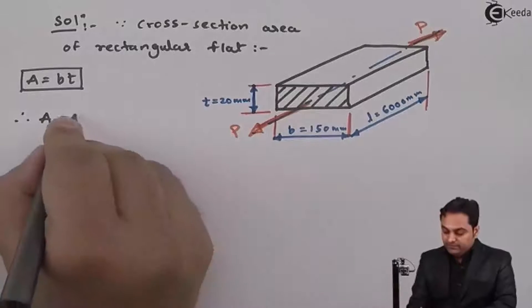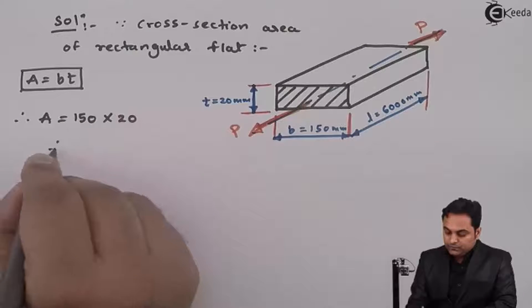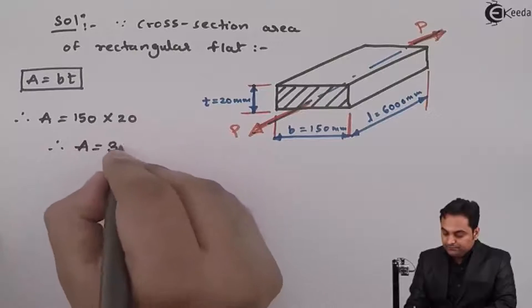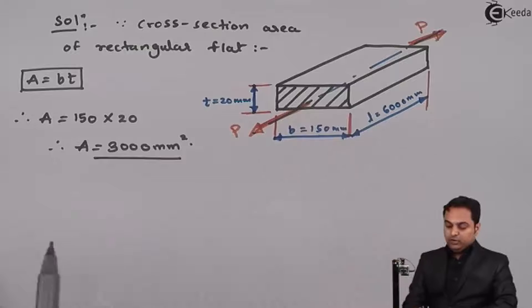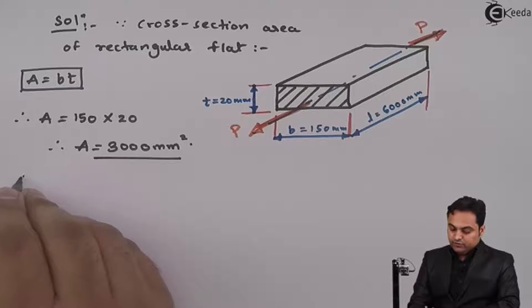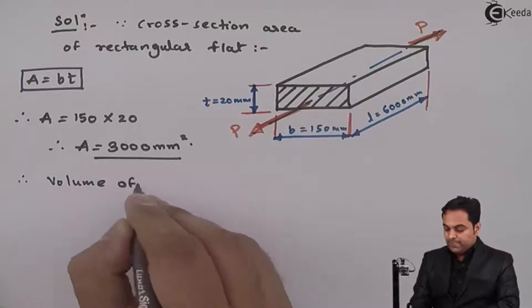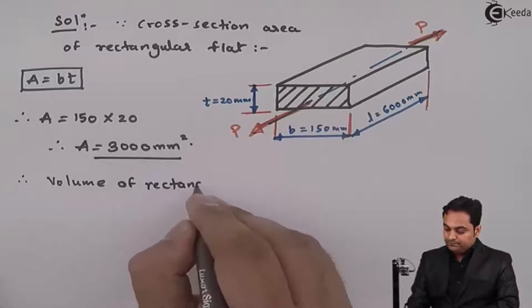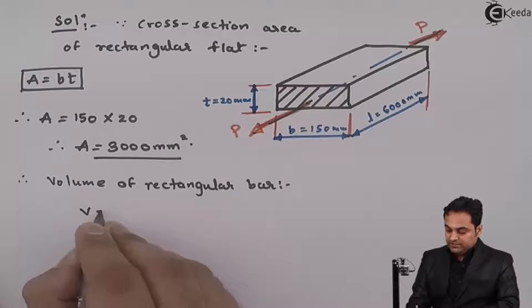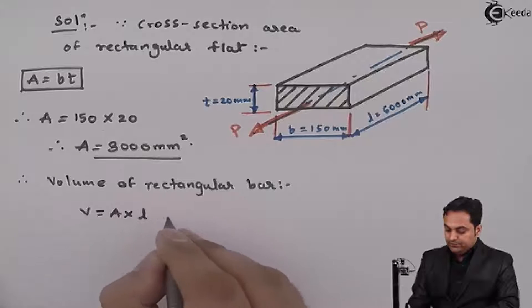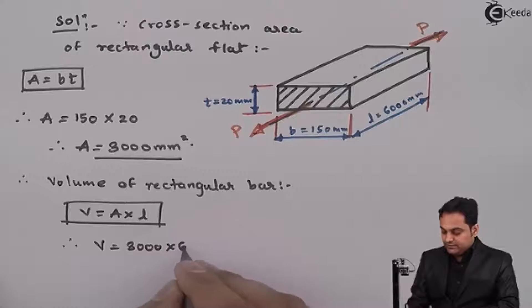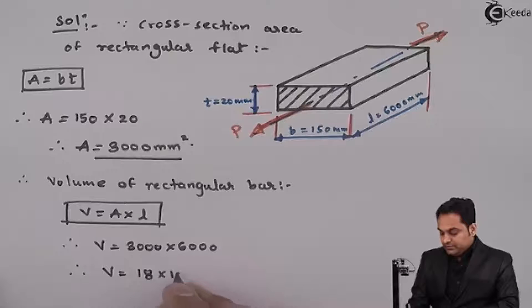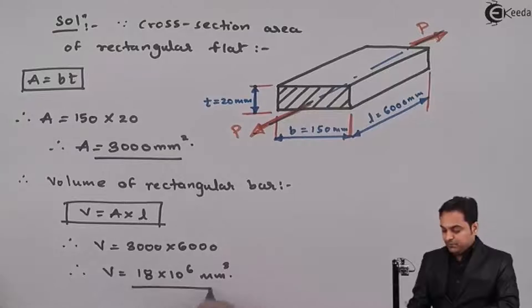Therefore, area A = 150 × 20 = 3000 mm². Volume of the rectangular bar = area × length = 3000 × 6000 = 18 × 10⁶ mm³.